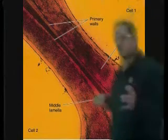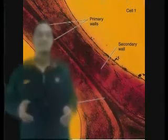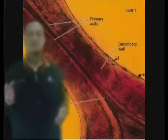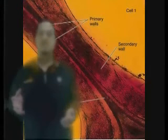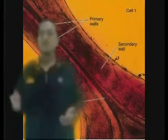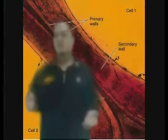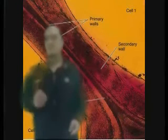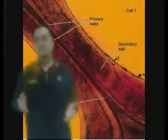Difference number three is cell walls and cell content. Plant cells have a cell wall, but animal cells do not. The cell wall is not rigid in all cases, but is sometimes fairly rigid and strong. There are several functions of the cell wall. First, it acts as a filter mechanism.